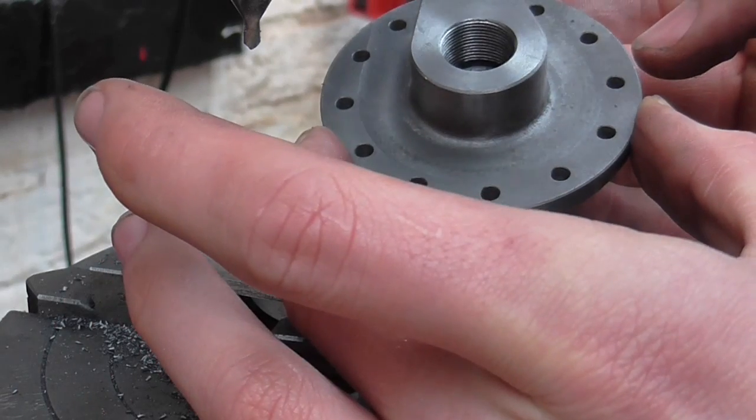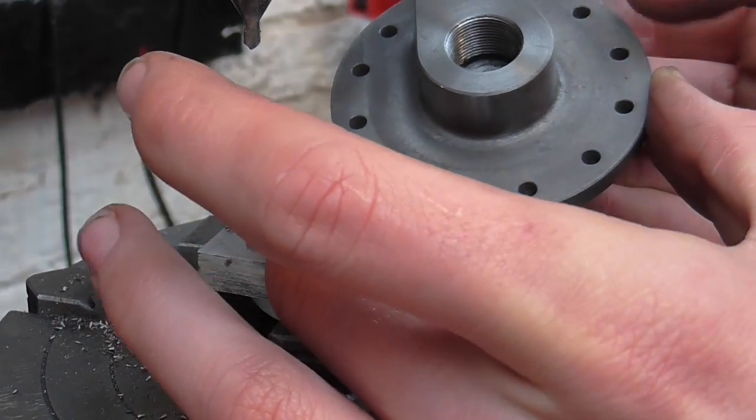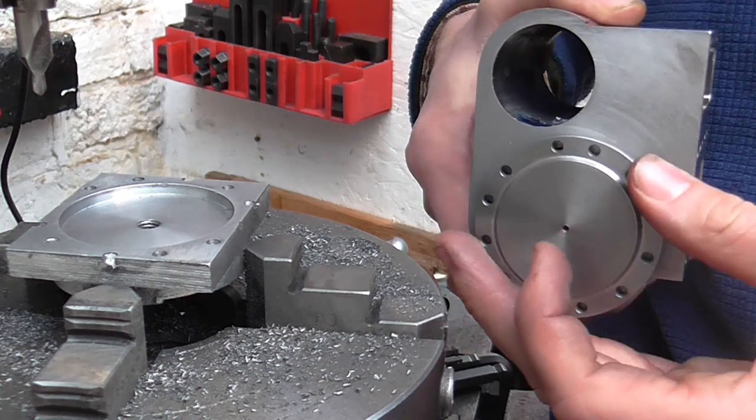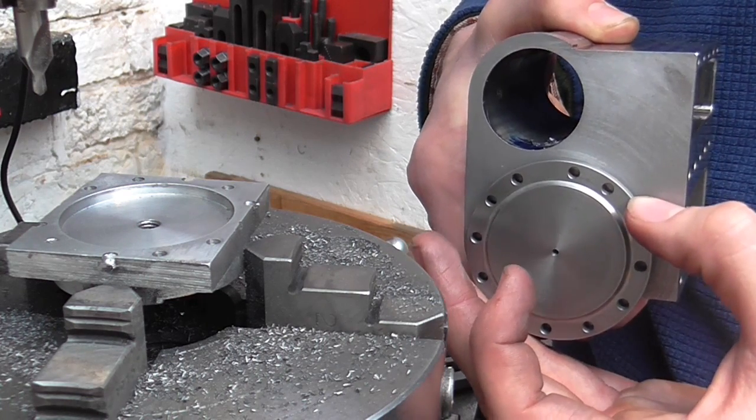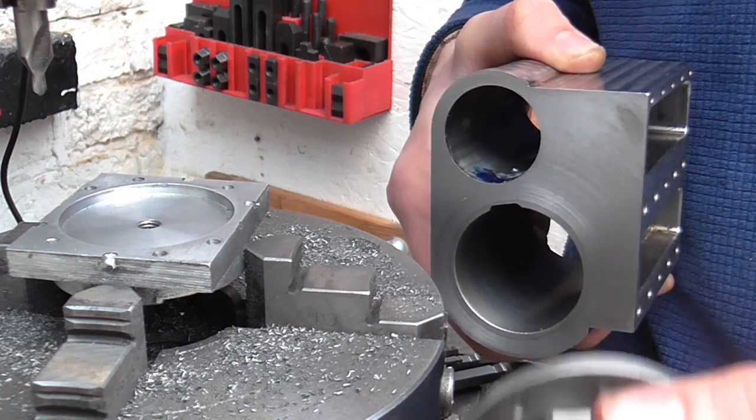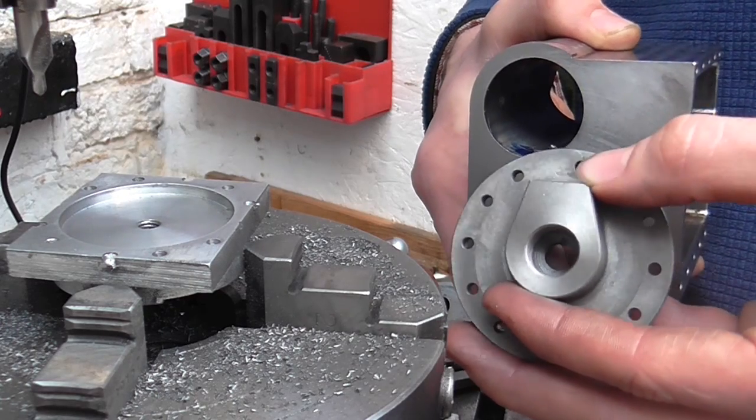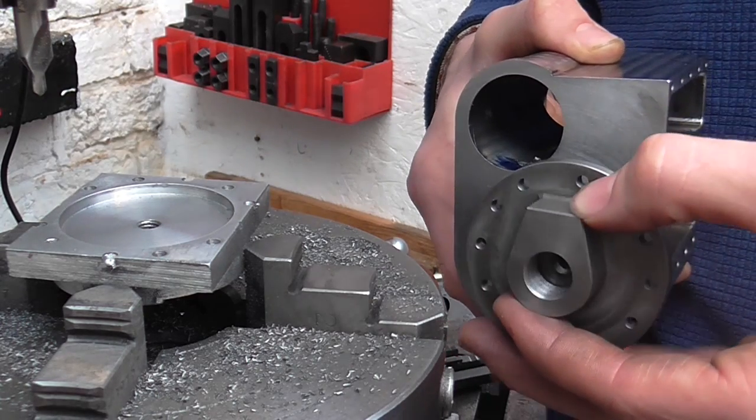So there's the hole pattern. Let's have a look at what's going on here. Here's the cylinder block you saw earlier. I had to come up with a hole spacing to miss the steam port.